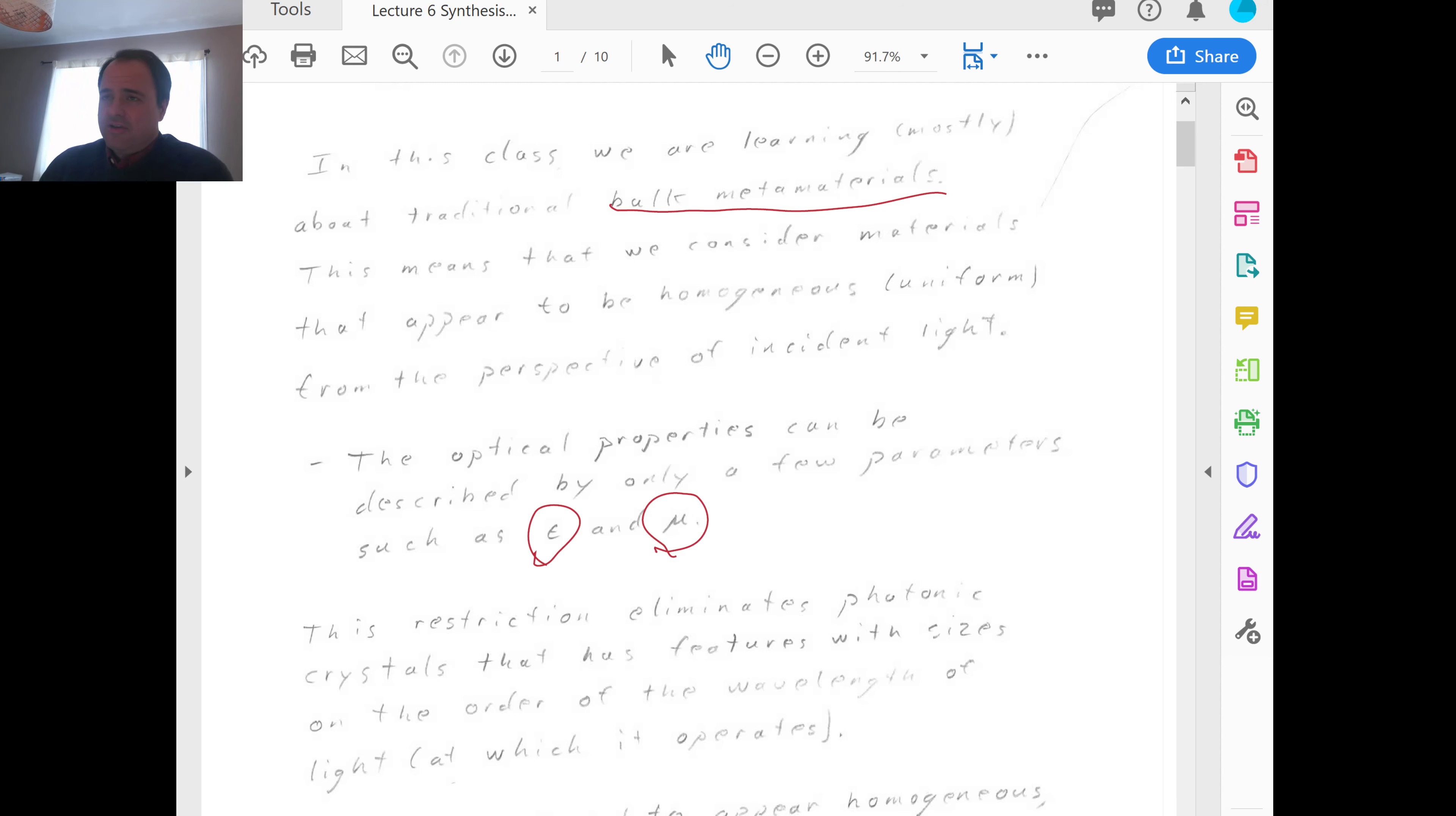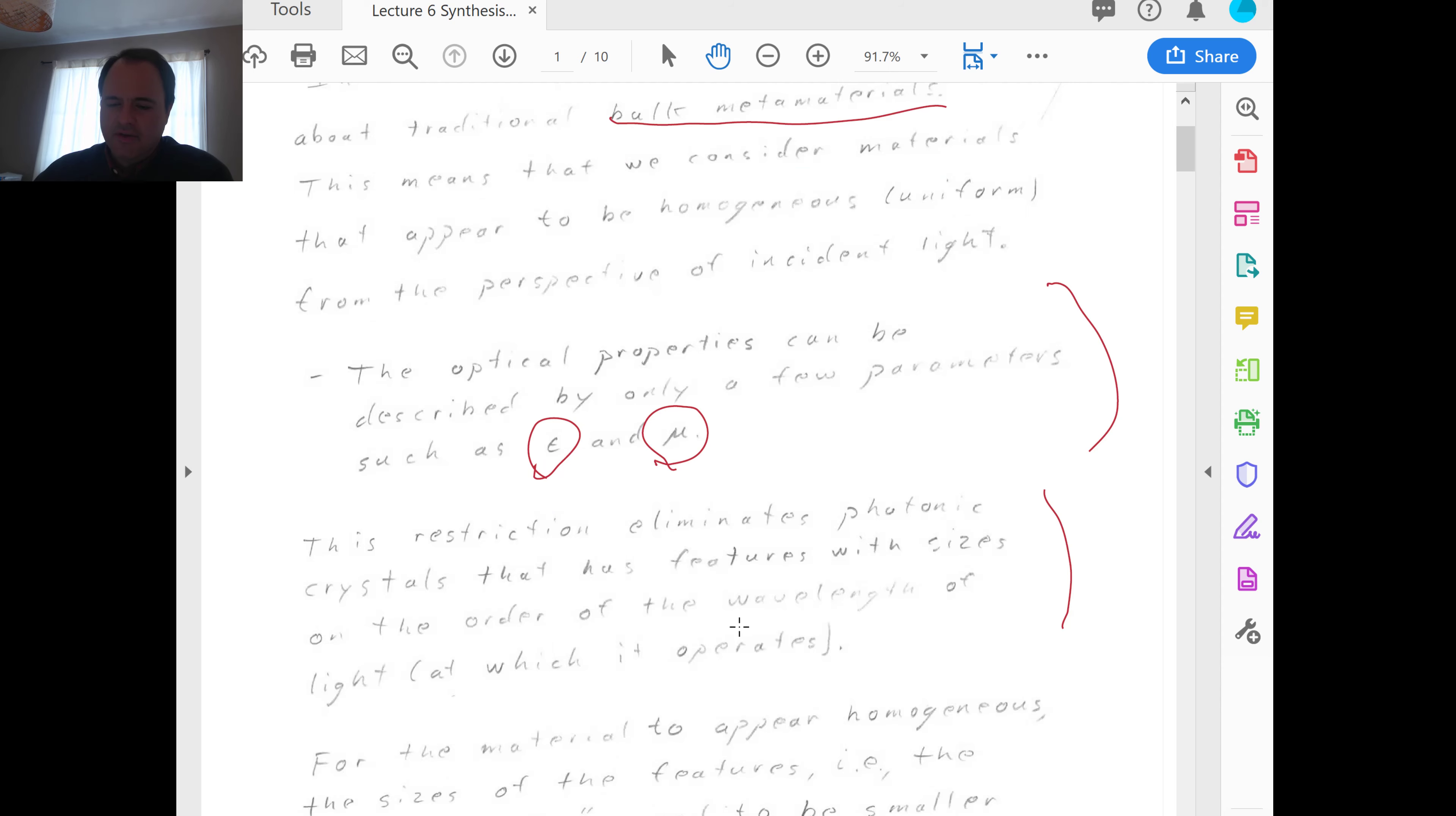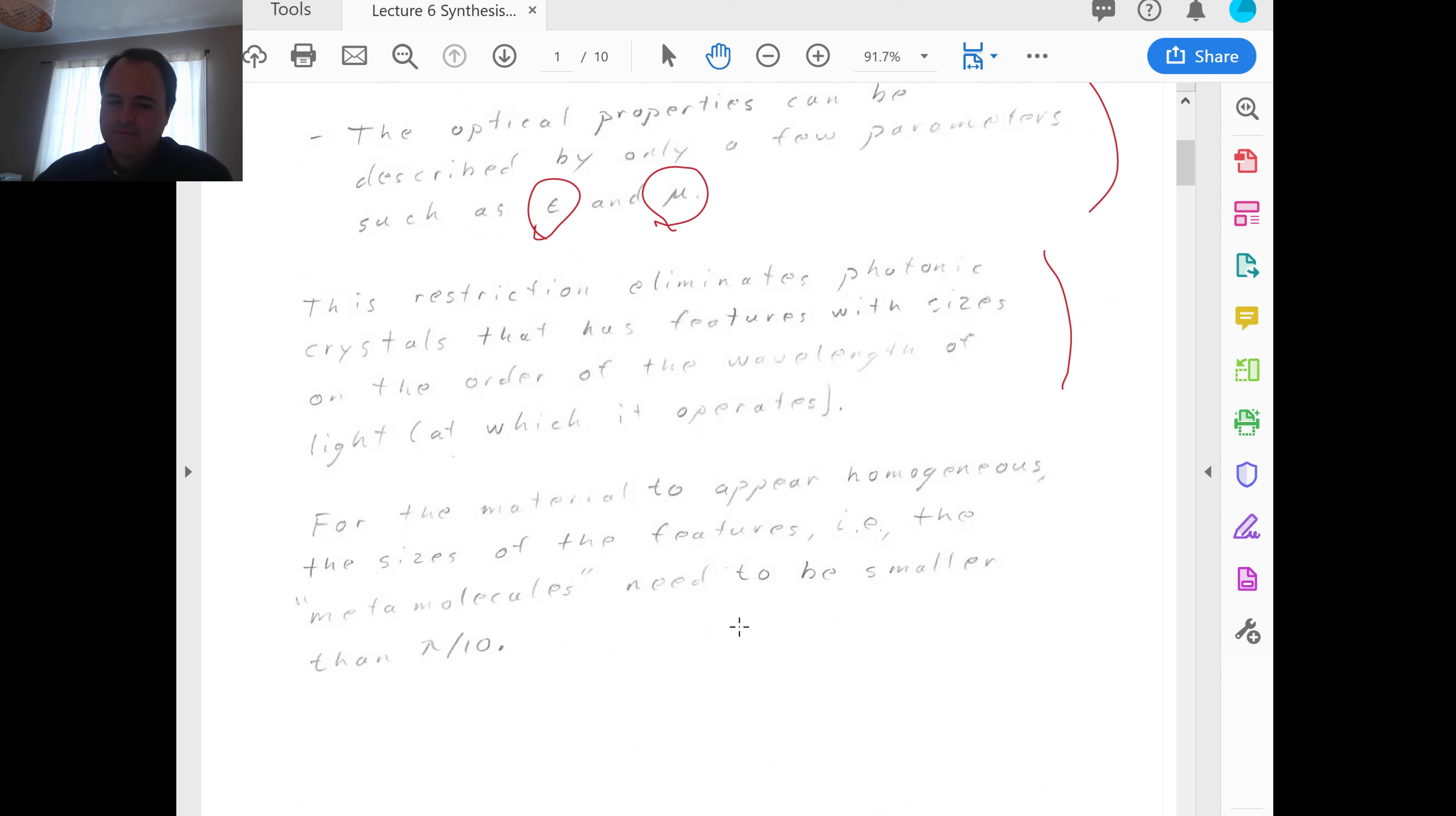So these feature sizes are on the order of the wavelength of light. And so from the perspective of light, that photonic crystals are certainly not homogenous materials that can be described by a few parameters epsilon and mu. The optical properties are very complex. And so in the traditional metamaterial field, they say those are excluded from using the term metamaterials. So for the material to be homogenous, the rule of thumb, it's not hard and fast, but the general rule is that the features should be somewhere around lambda over 10 in size.